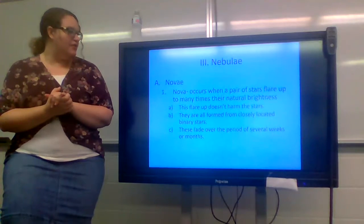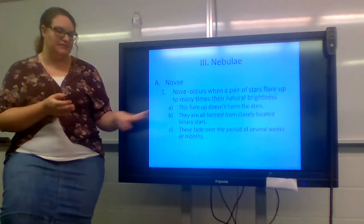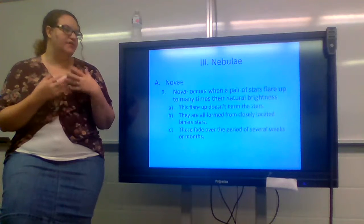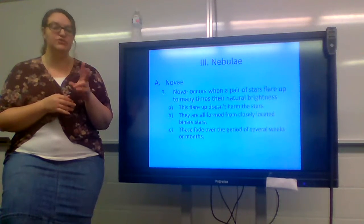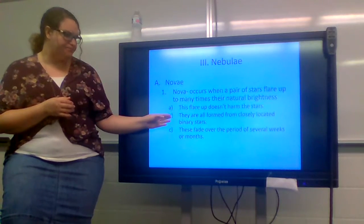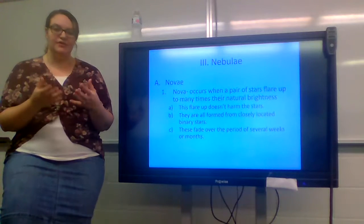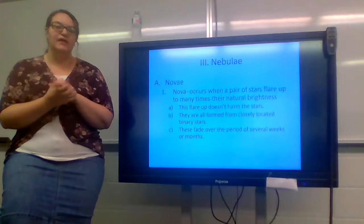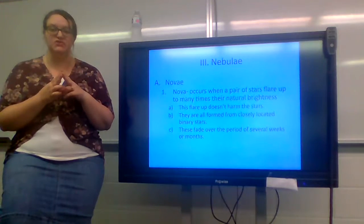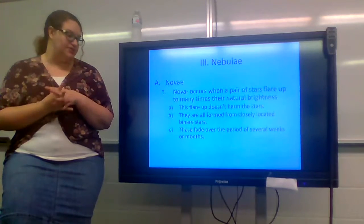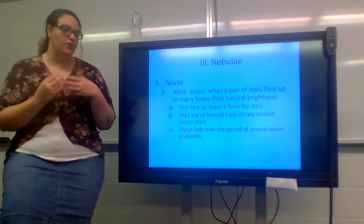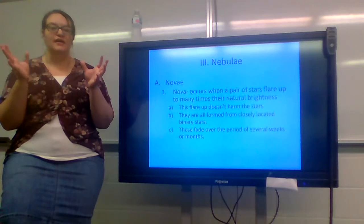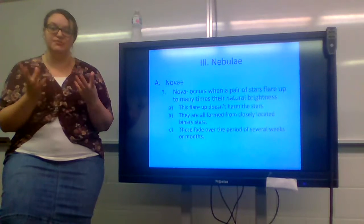So, nebulae or novae occur when a pair of stars flare up to many times their natural brightness. Now, this flare-up doesn't harm the stars. You're dealing with two stars that have flared up at this point in time. They are all formed from closely located binary stars. We talked about binary stars when we talked about our last chapter about stars. So a nova is formed when two close binary stars flare up. Basically, they're feeding off of each other's energy. These fade over the period of several weeks or months. A nova is not something that lasts forever. It flares up for a couple weeks, maybe a couple months, and then the stars go back down to their original energy position.